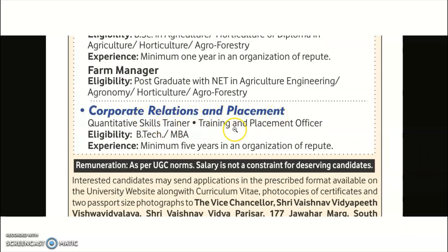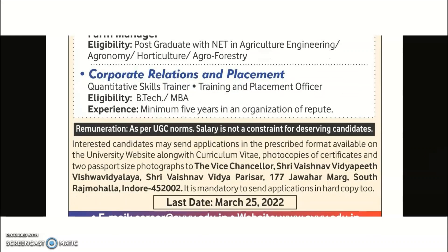Corporate Relations, Placement, and Quantitative Skills Trainer positions are also required. Training and Placement Officer eligibility is B.Tech or MBA with a minimum five years of experience in a reputed organization. Salary is as per UGC norms and is negotiable for deserving candidates. Interested candidates may send applications in the prescribed format available on the university website.